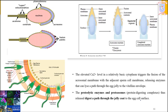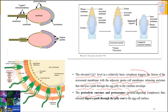The acrosomal process extends far from the acrosome. The elevated calcium level in a relatively basic cytoplasm triggers the fusion of the acrosomal membrane with the adjacent sperm cell membrane, releasing enzymes that can lyse a path through the egg jelly to the vitelline envelope. The proteolytic enzymes and proteosomes — protein digesting complexes — digest a path through the egg jelly coat. Here you can see the release of the acrosomal vesicle forming a path through the jelly coat to the egg cell surface.